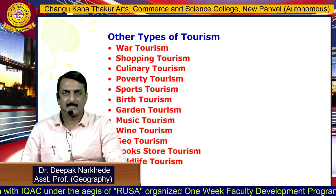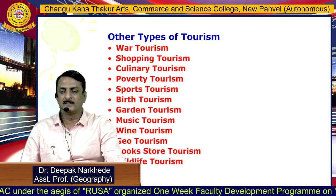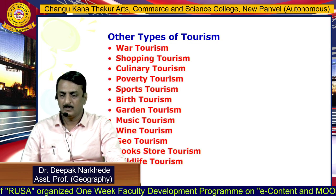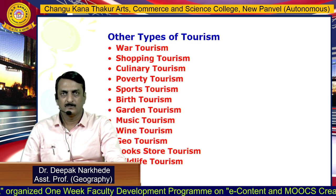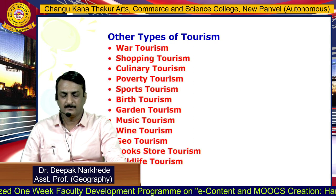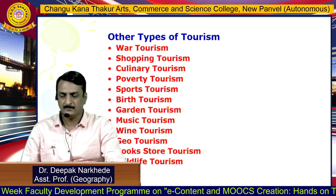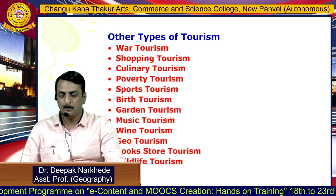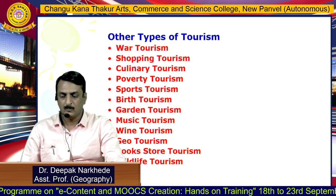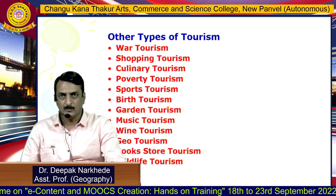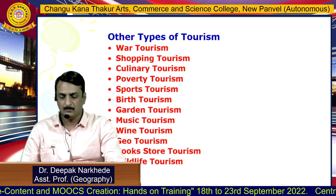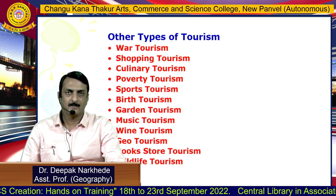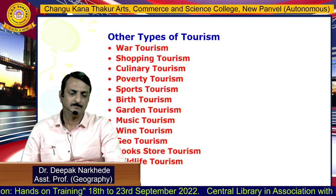Apart from these, there are several other types of tourism, including war tourism, shopping tourism, culinary tourism, poverty tourism, sports tourism, birth tourism, garden tourism, music tourism, wine tourism, geotourism, bookstore tourism, and wildlife tourism. These are some of the many types of tourism. Thank you.